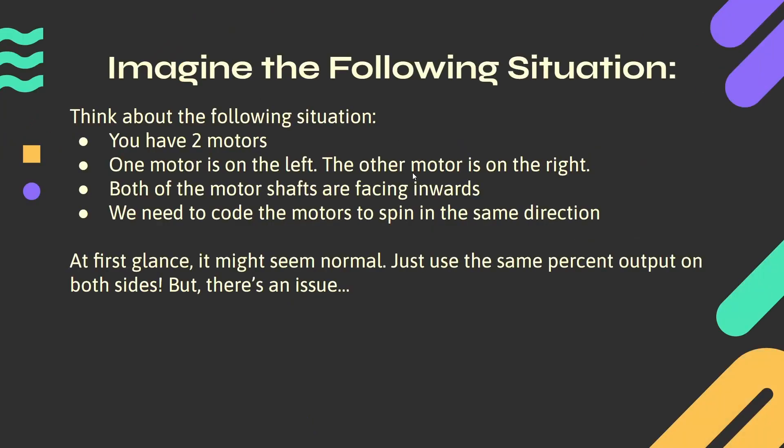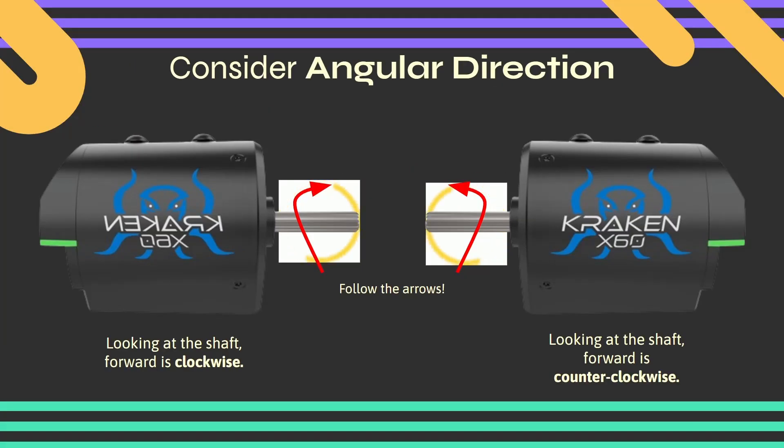Imagine the following situation: you've got two motors, one motor is on the left, the other motor is on the right. Both of the motor shafts — the things that are actually spinning — are facing inwards, and we need to code the motors to spin in the same direction. At first glance you might think just set them both to 50% and that should be fine. But there is an issue — let's look at the way these motors spin. This is what the motors look like if you haven't actually seen one before.